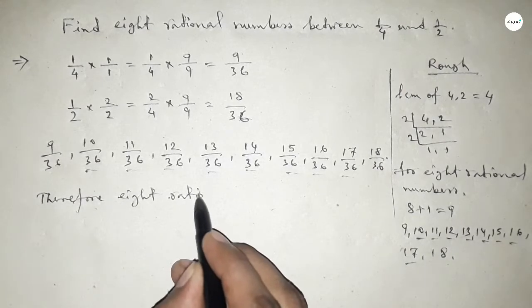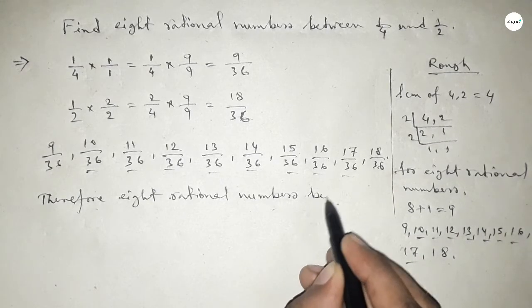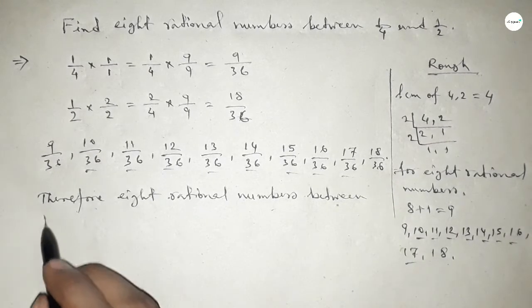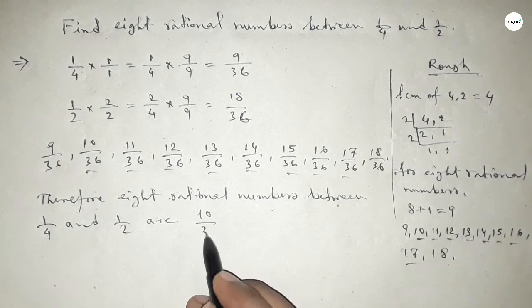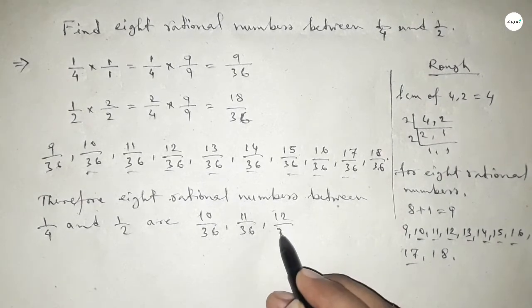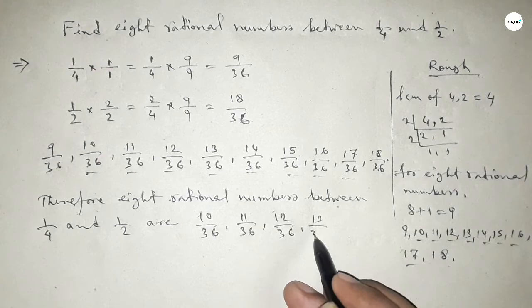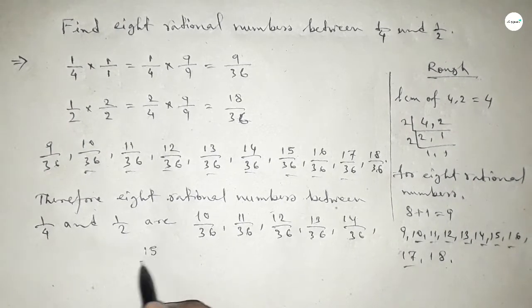So therefore, 8 rational numbers between 1 over 4 and 1 over 2 are: first one is 10 over 36, 11 over 36, 12 over 36, 13 over 36, to last one 17 over 36.